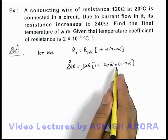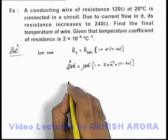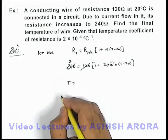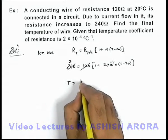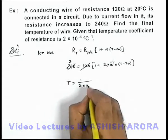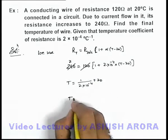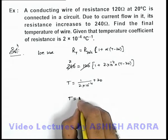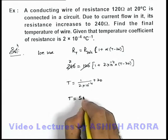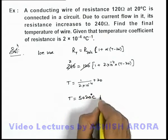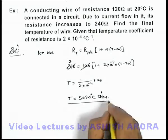On further simplifying the result, you can see the value of T we are getting is 1 over 2 × 10^-4 plus 20. On further solving this expression, we are getting it to be 5020 degrees Celsius. That will be the answer to this problem.